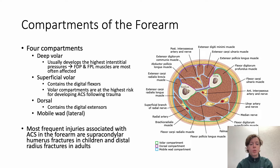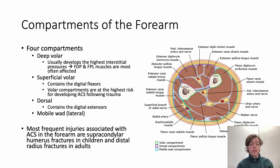The forearm is one of the most commonly affected sites in ACS and has four compartments. The deep volar compartment usually develops the highest interstitial pressures, with the flexor digitorum profundus and flexor pollicis longus muscles most often affected. There is also a superficial volar, a dorsal, and a mobile wad compartment. The most frequent injuries causing ACS in the forearm are supracondylar humeral fractures in children and distal radius fractures in adults.